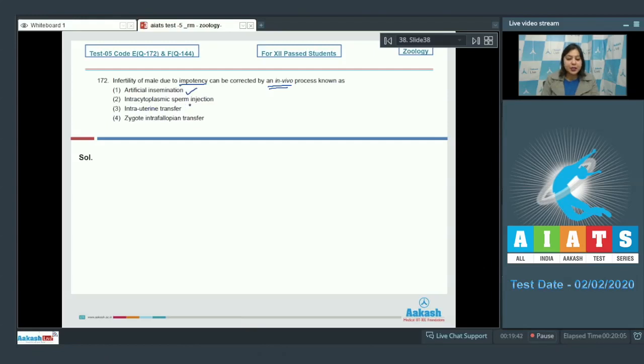Number 2, Intracytoplasmic sperm injection. This is incorrect as this is an in vitro technique that is it is carried out in the laboratory. Number 3, Intrauterine transfer involves the transfer into the uterus. Number 4, Zygote intrafallopian transfer is also incorrect as it involves the transfer of zygote into the fallopian tube.